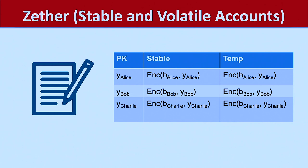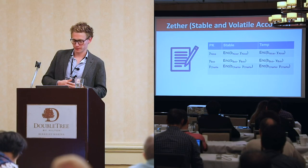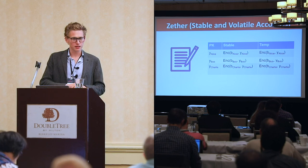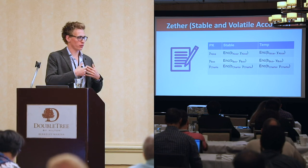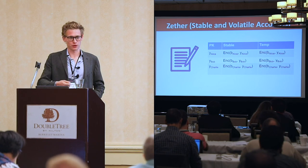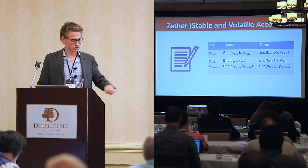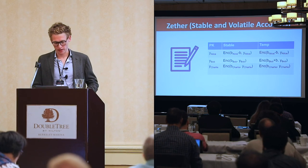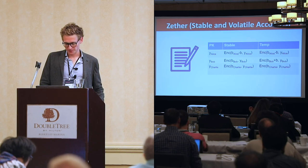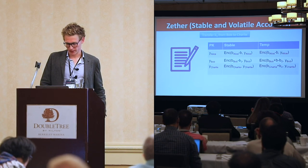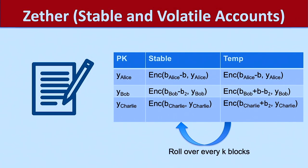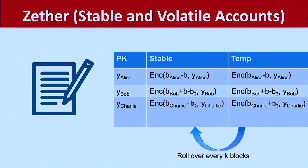The solution is that we have a temporary account and a stable account. The temporary account collects the incoming money and changes to your account. The stable account is the one with respect to which you write your proofs. You transfer your money from the stable account, but you only update the temporary accounts — especially of the receiver. Every so often, you roll over the temporary account into the stable account. In our implementation this is done automatically every couple of blocks.